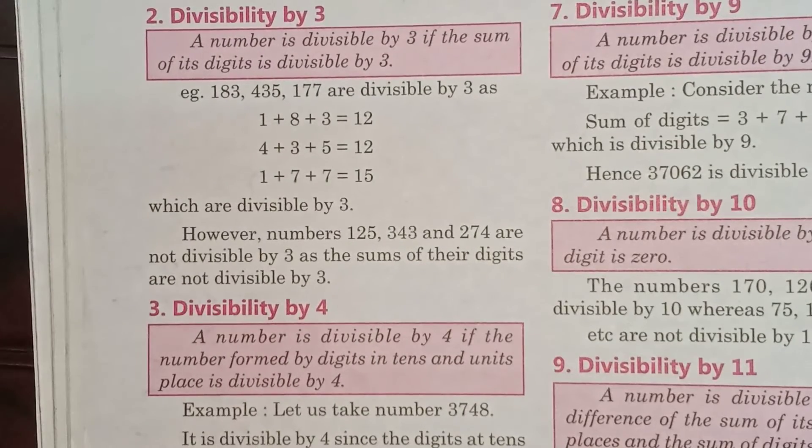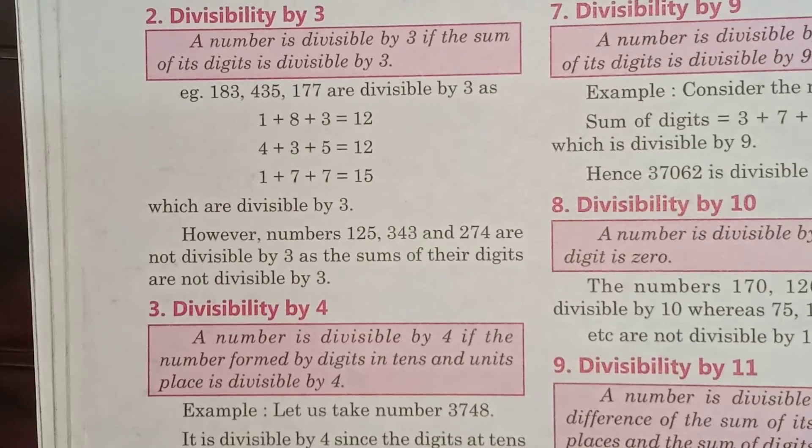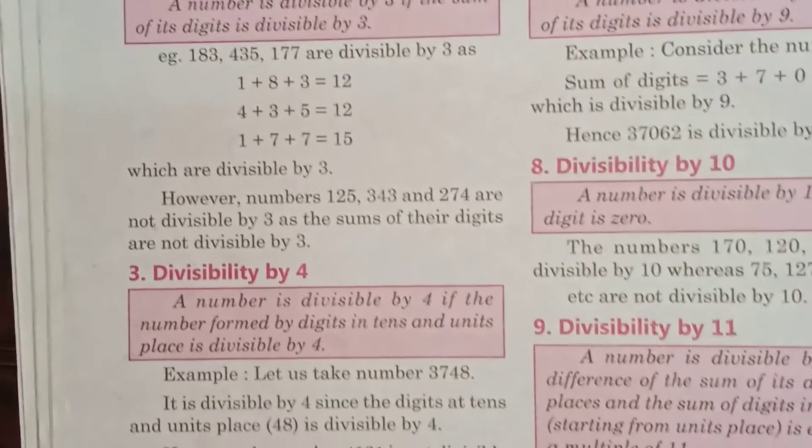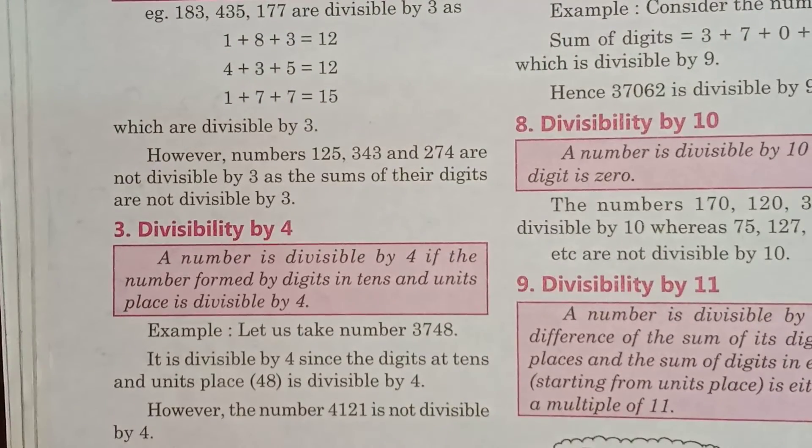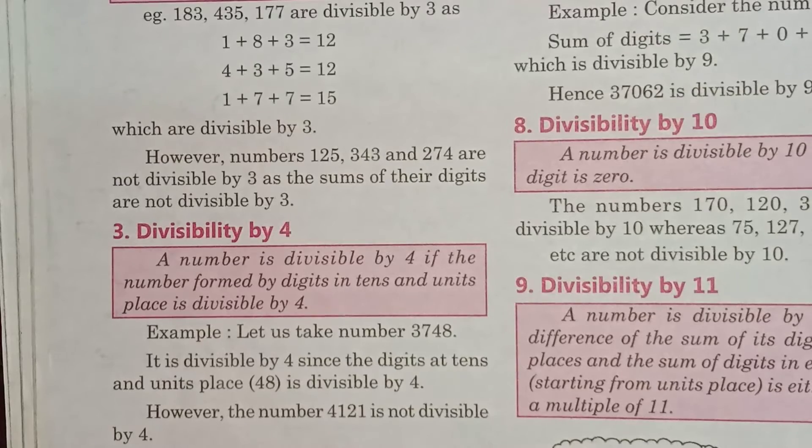Next, divisibility by 4. A number is divisible by 4 if the number formed by digits in tens and units place is divisible by 4.